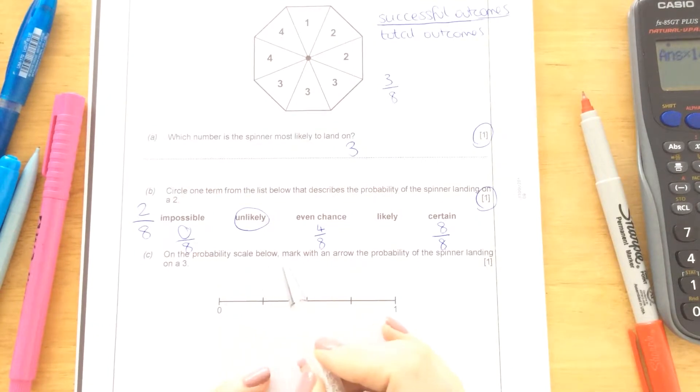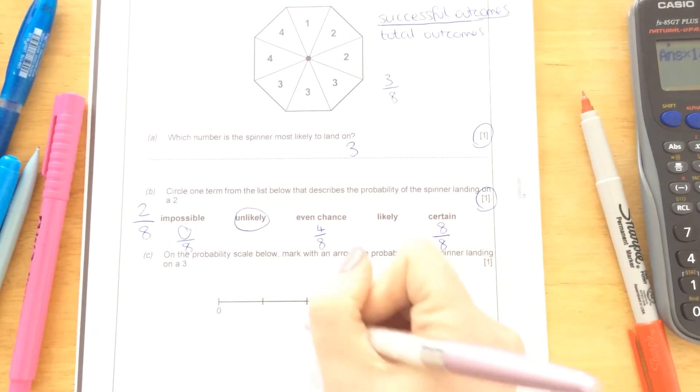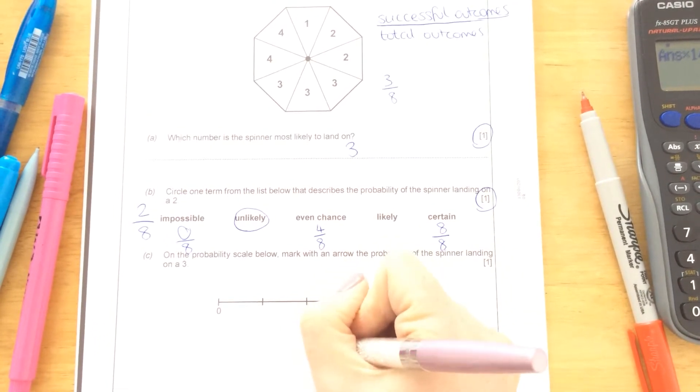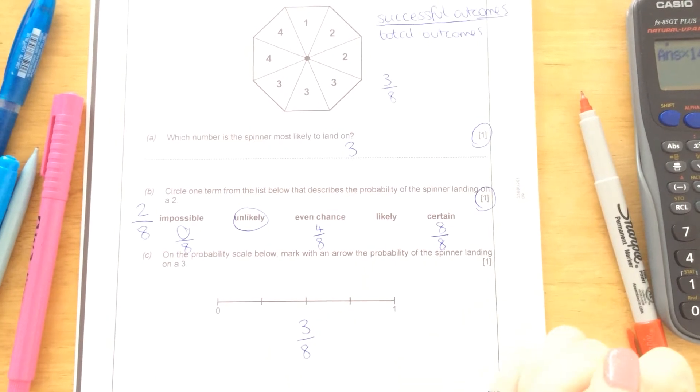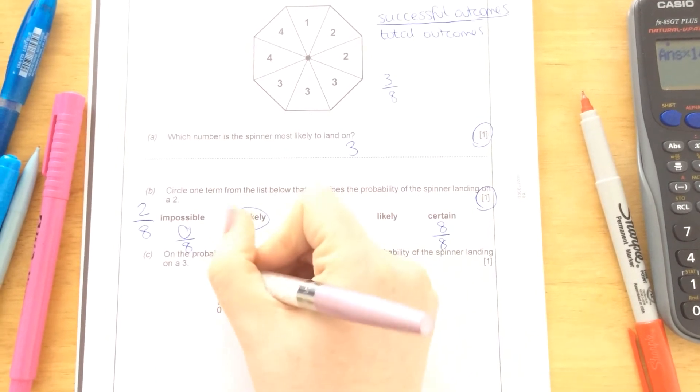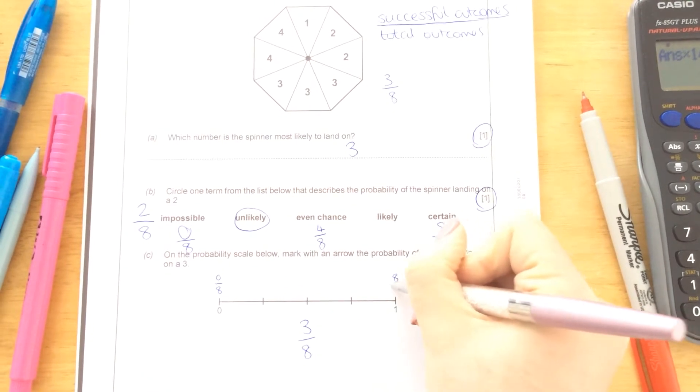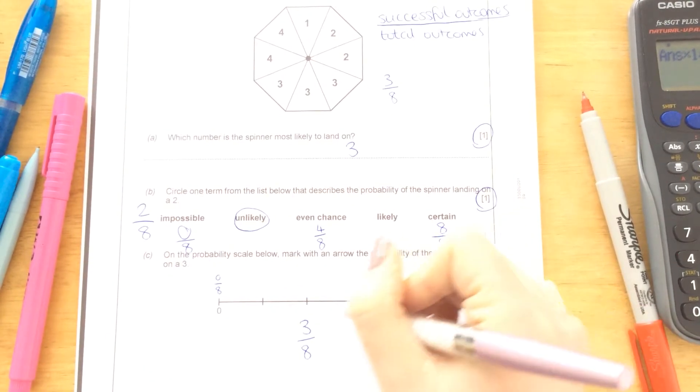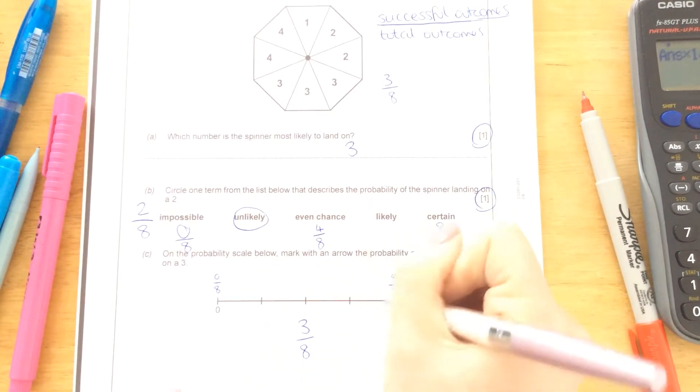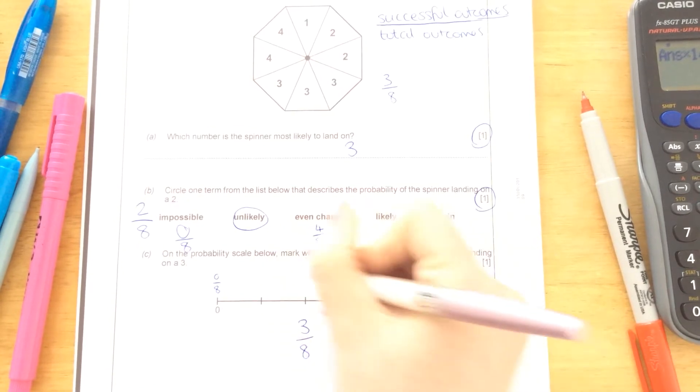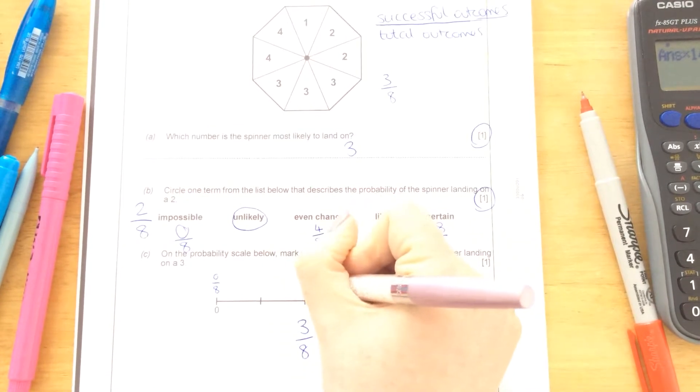On the probability scale below, mark with an arrow the probability of the spinner landing on a 3. We said the probability of it landing on a 3 was 3 out of 8. Again, at 0 it would be 0 out of 8. At 1 it would be 8 out of 8. So this probability line is split up into 8 options here, so that would be 4 out of 8.